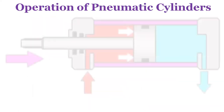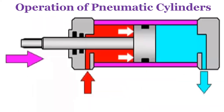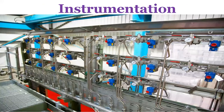Then we have the operation of pneumatic cylinders. The forward movement of air pushes the piston and as the air comes out it comes back — that's how pneumatic cylinders are operated to and fro. In instrumentation, we also have a wide variety of instruments operated using compressed air.